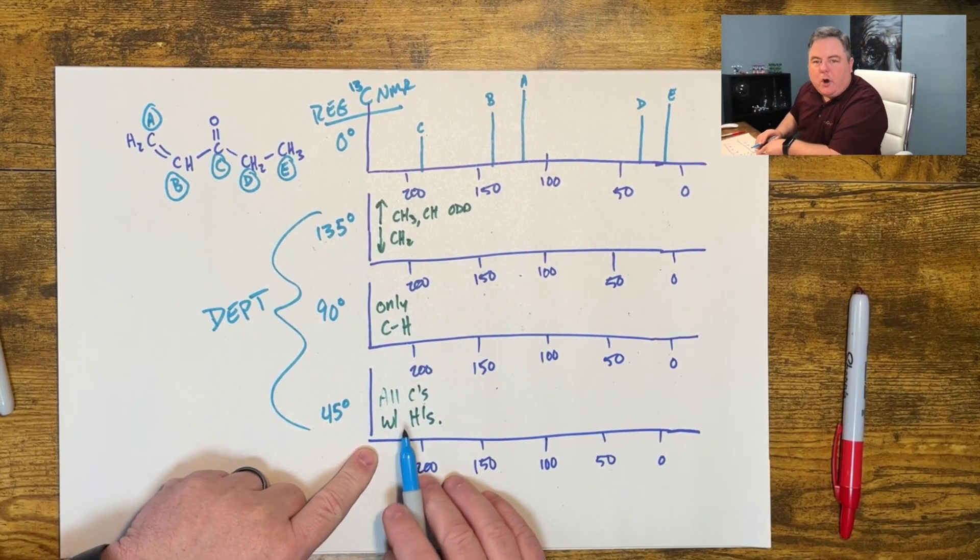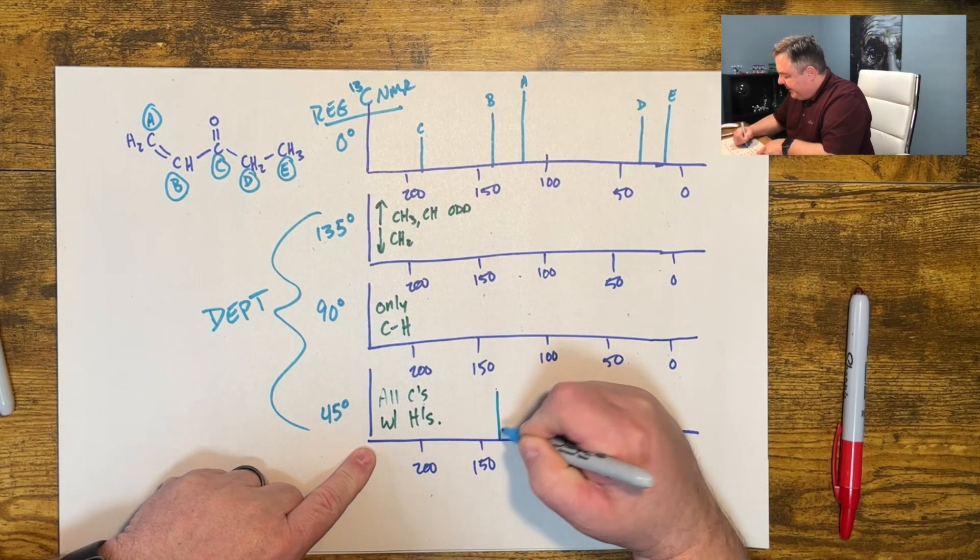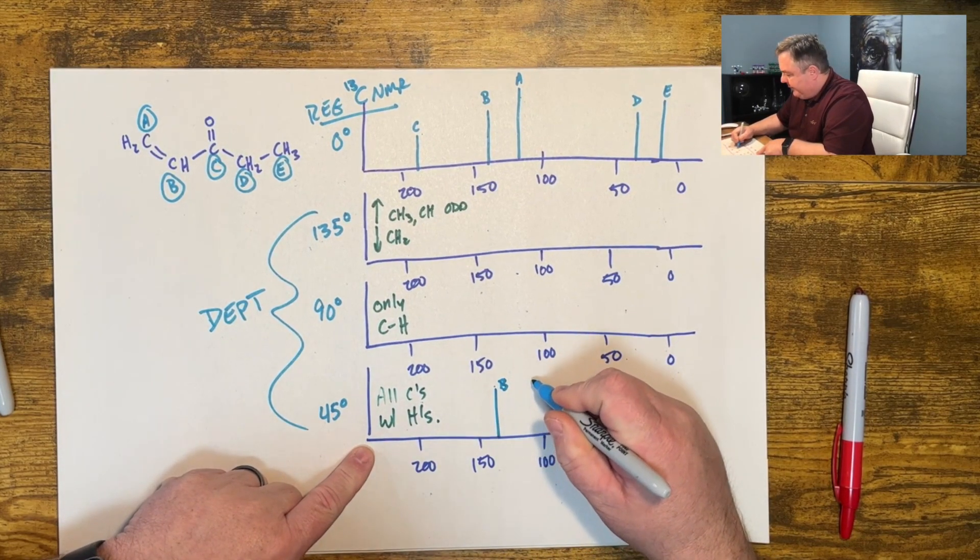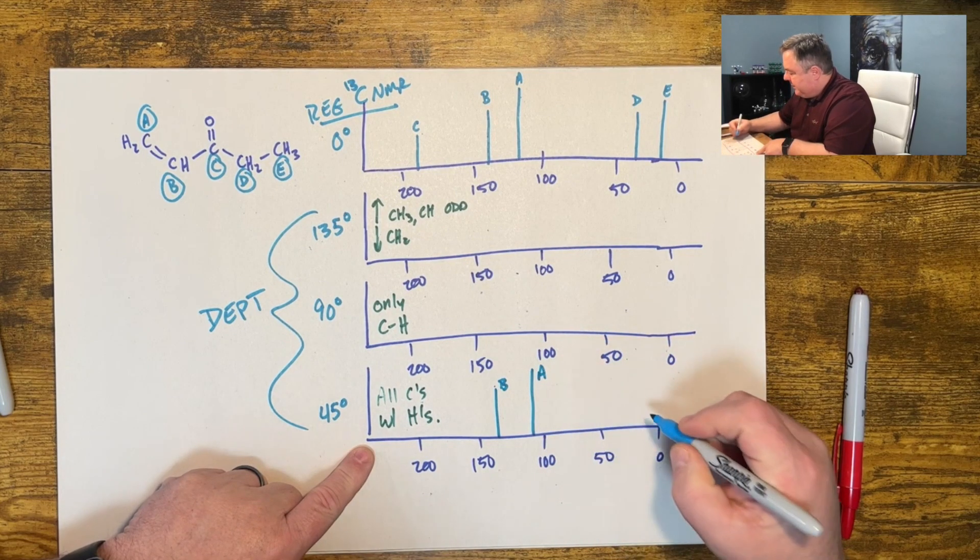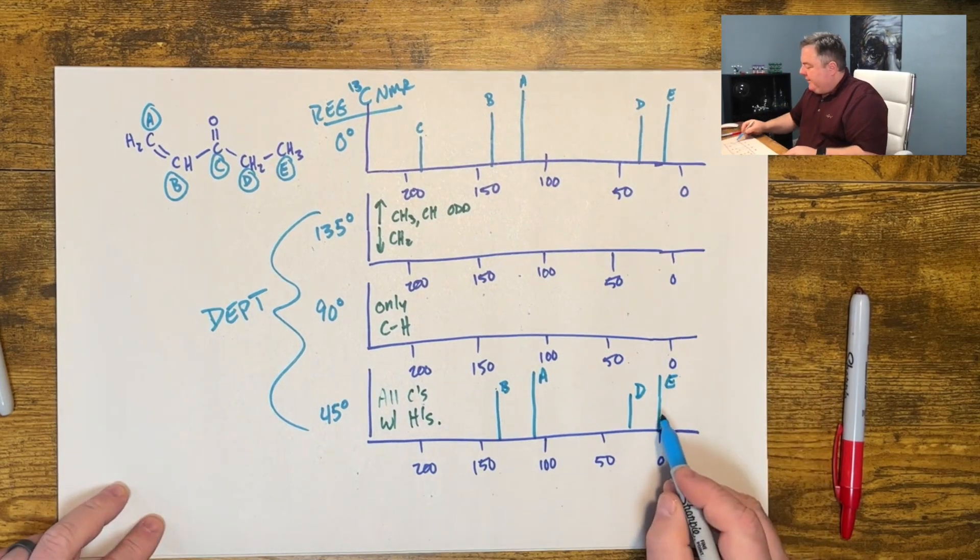Okay, now the bottom one, only carbon atoms with hydrogen show up. So you end up getting a spectrum that looks like this. This one shows up, this one shows up, this one shows up, and this one shows up.